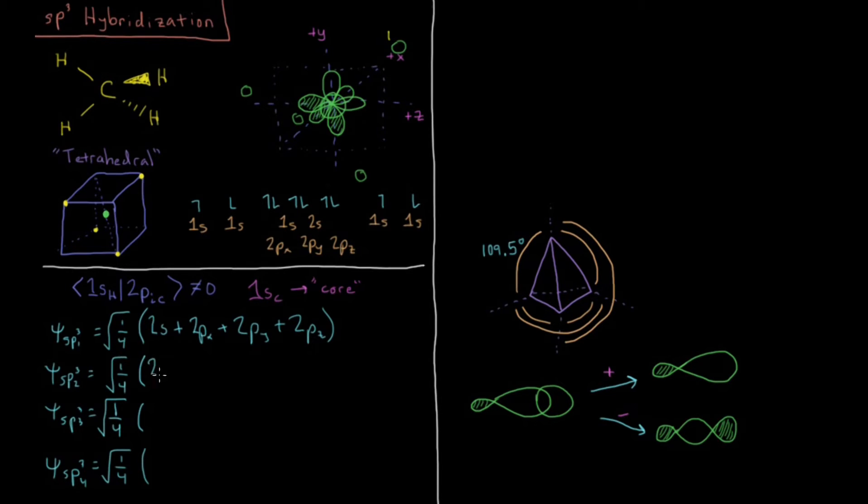And our next one, 2s minus 2px minus 2py plus 2pz. Again, it's an equal weight of the square root of 1 fourth on all of them, so it's 1 quarter character of each of these orbitals. So start at the origin, we go minus x, we go minus y, and we go plus z, so that leads us over here, down to this corner of our cube. So this is hydrogen number 2, which is going to be interacting with sp3 orbital number 2.